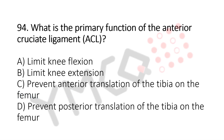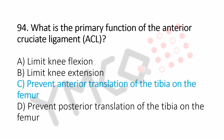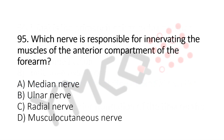What is the primary function of the anterior cruciate ligament? Option A: limit knee flexion. Option B: limit knee extension. Option C: prevent anterior translation of tibia on the femur. Option D: prevent posterior translation of tibia on the femur. And the answer is option C, prevent anterior translation of the tibia on the femur. Now let us move to question number 95.